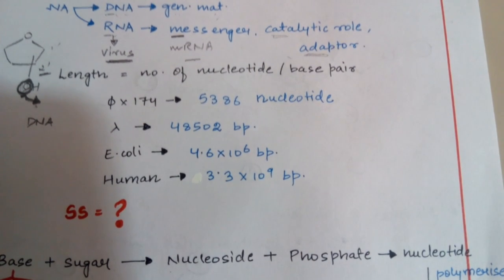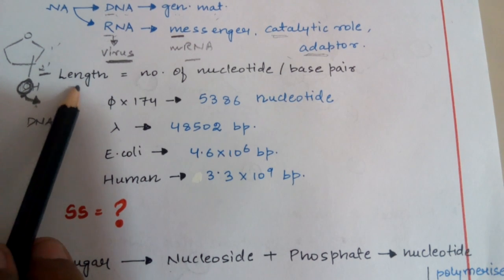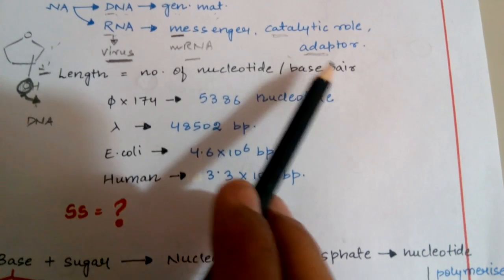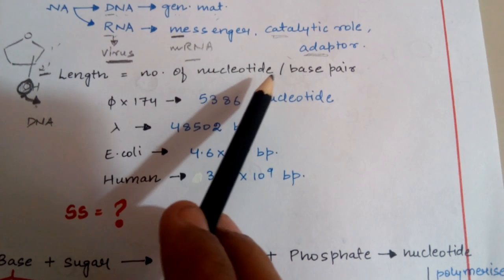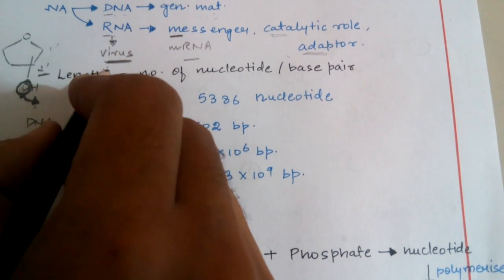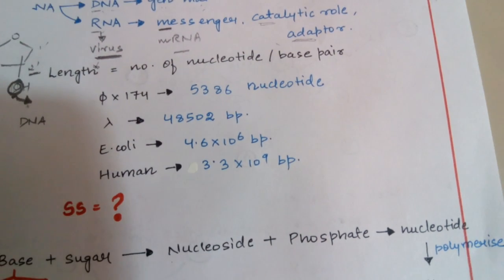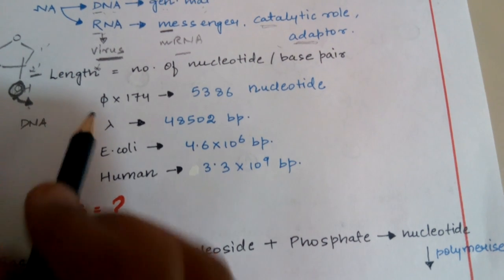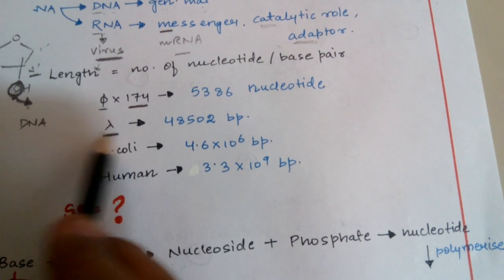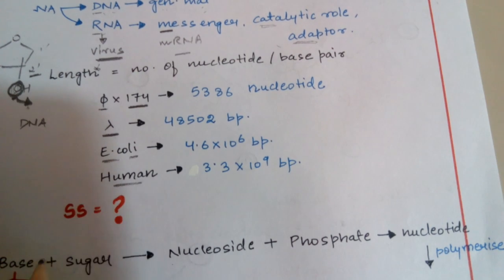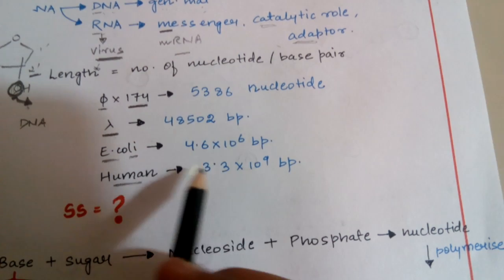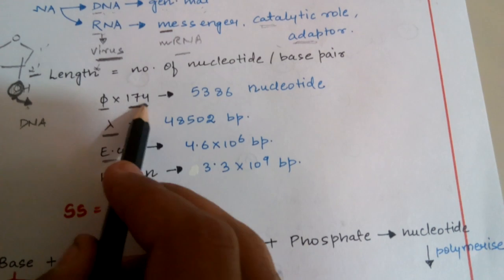How do we calculate the length of different kinds of genetic material? The length equals the number of nucleotides or nucleotide base pairs present in them. Let us take some examples: phage phi 174, lambda phage, E. coli (Escherichia coli), and human beings. We are going to look at how many nucleotides or nucleotide base pairs are present in each of these organisms.